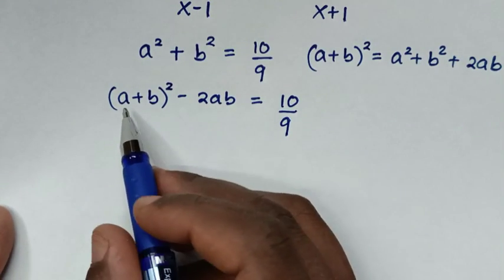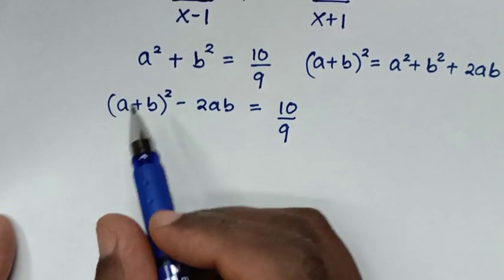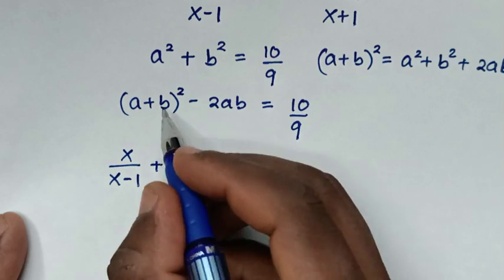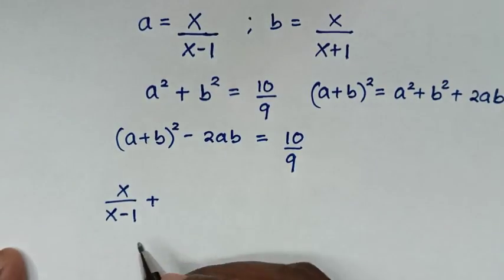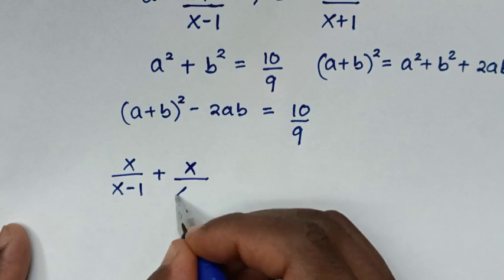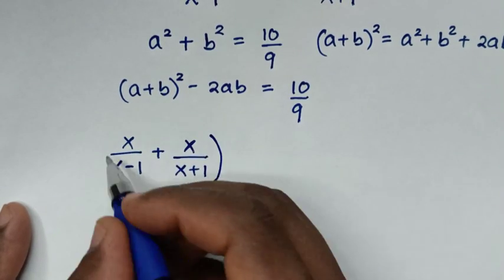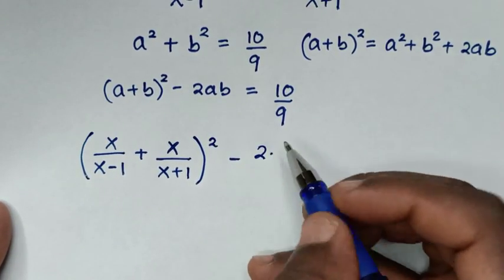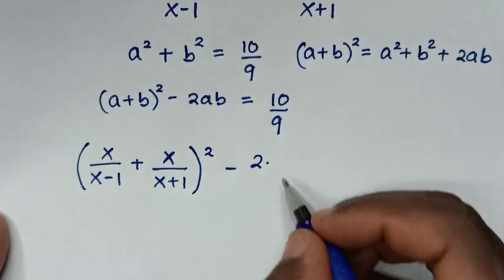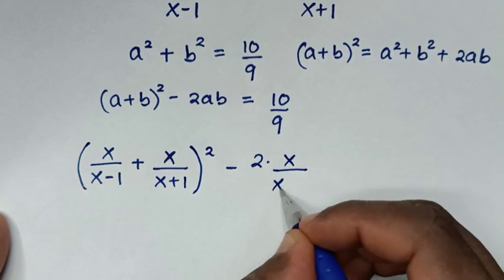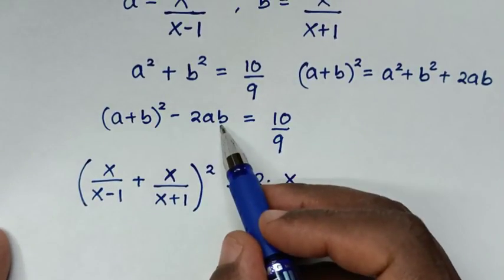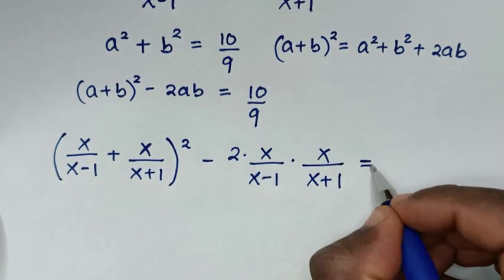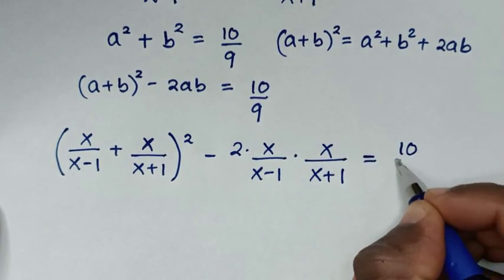In the next step, we substitute the values of a and b. So it will be x over (x minus 1) plus x over (x plus 1), bracket squared, minus 2 times x over (x minus 1) times x over (x plus 1), is equal to 10 over 9.